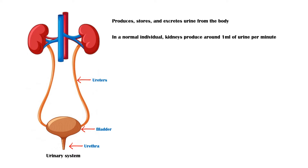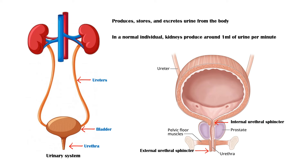The capacity of the bladder is variable. A healthy bladder can usually retain about 350–500 mL of urine. Three sets of muscles control the flow of urine from the bladder via the urethra: the internal and external sphincters, which are formed by involuntary and voluntary muscles respectively, and pelvic floor muscles.